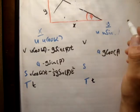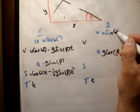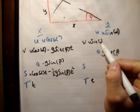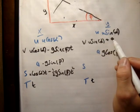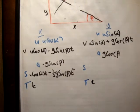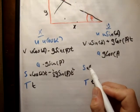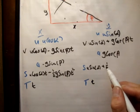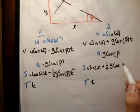Similarly, v sub y becomes u sine of alpha plus g cos beta times t. And s sub y becomes u sine of alpha plus a half g times cos beta t squared.